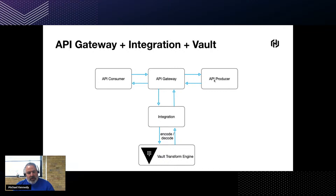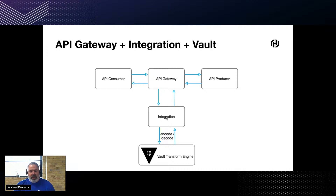When you transit through an API gateway, you have the opportunity to go through an integration layer that can then talk to the Vault Transform engine to encode and decode values. The idea here is that by doing so you're creating a barrier between your consumer and your producer, limiting where sensitive data goes — just to the API gateway, the integration layer, Vault, and the API producer doesn't actually see the sensitive information. This is obviously more complicated than that — you'd have to analyze your particular domain — but in this example we'll show you how that's done.